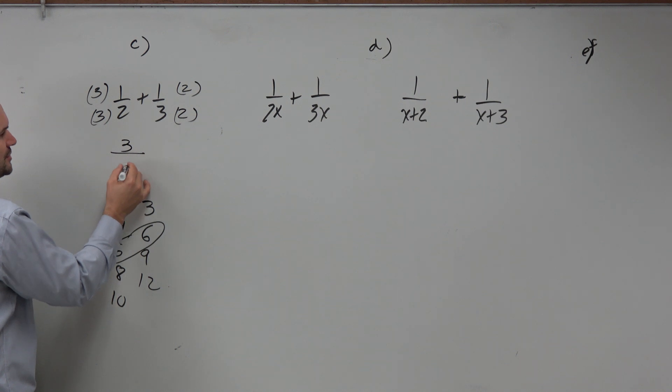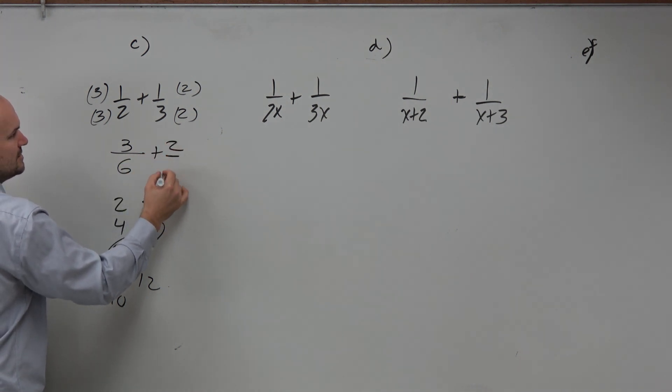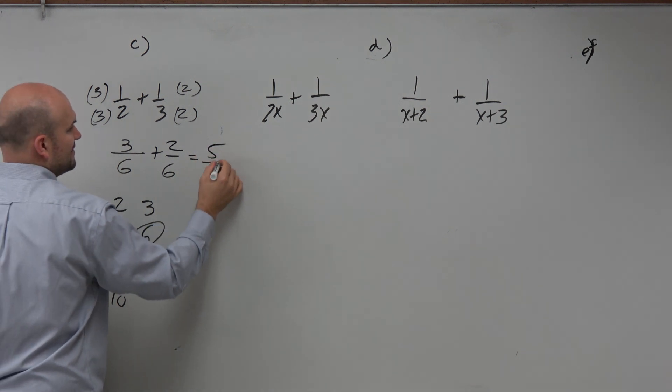So therefore, this would be 3 over 6 plus 2 over 6, which equals 5 sixths.